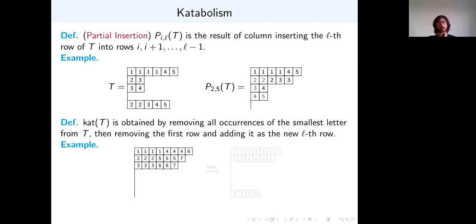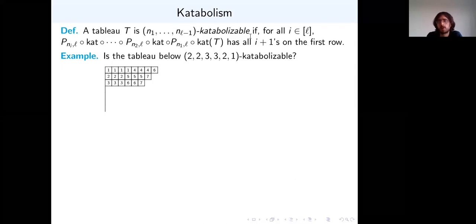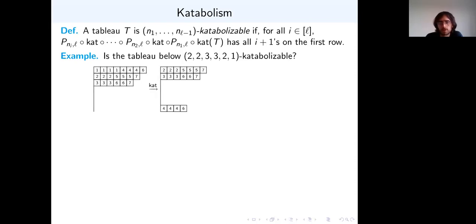We need another operation called cat. What cat does is remove the smallest letter from the tableau and then take the top row and move it down to the bottom — basically it just rotates the rows and gets rid of the smallest letter. We define a tableau to be catabolizable with respect to a sequence of non-negative integers if, when we apply a sequence of cats and partial insertions, the smallest letter always lies on the top row.